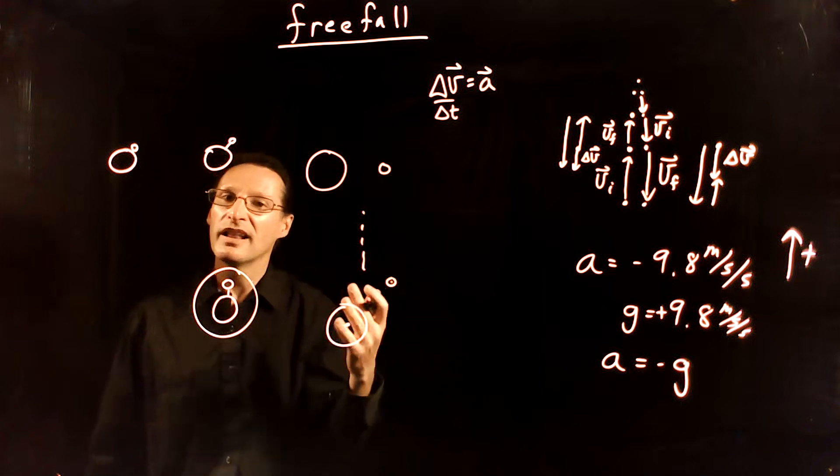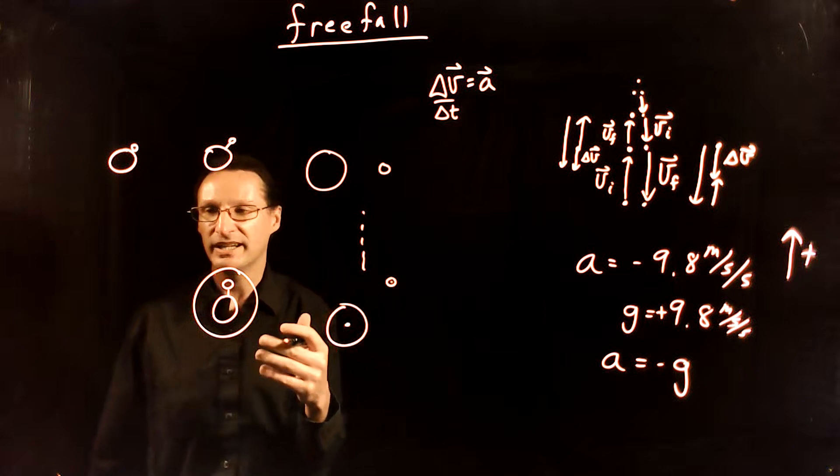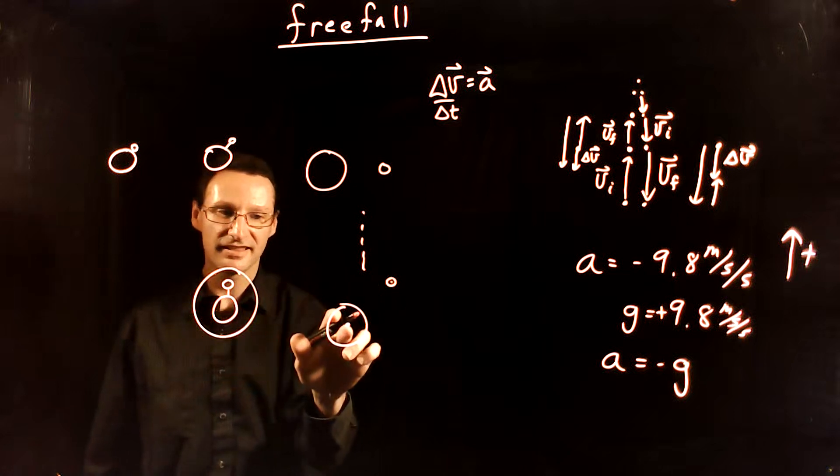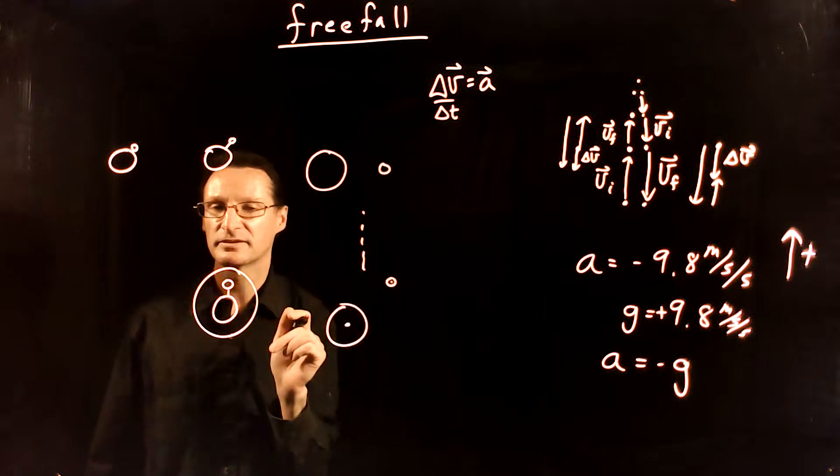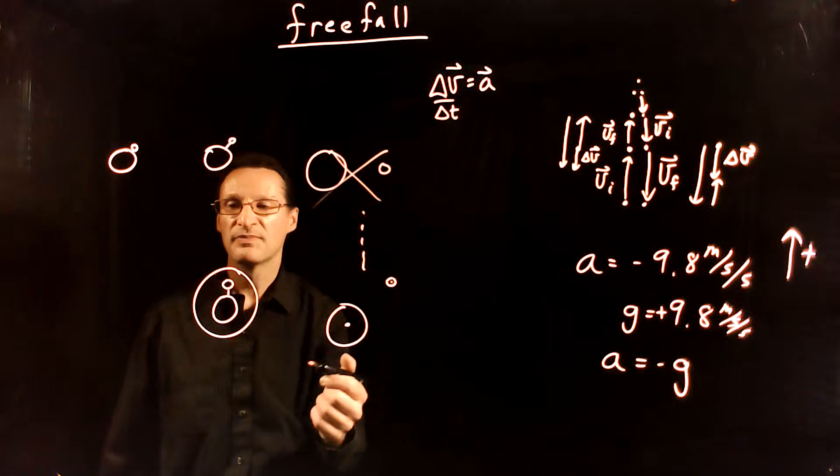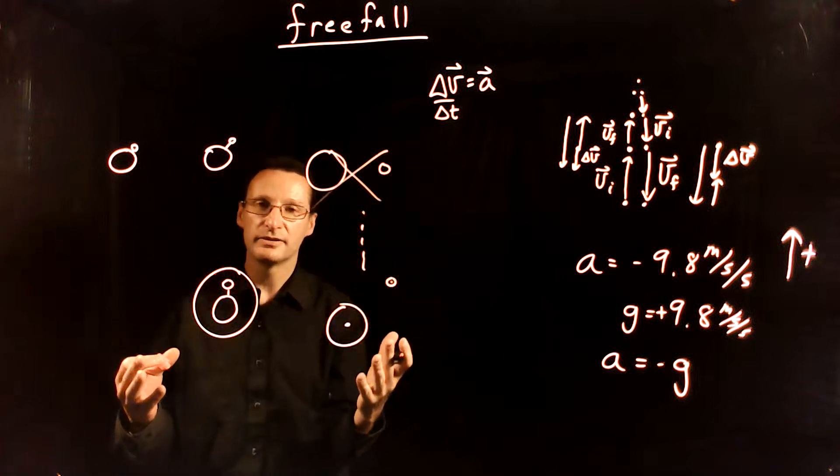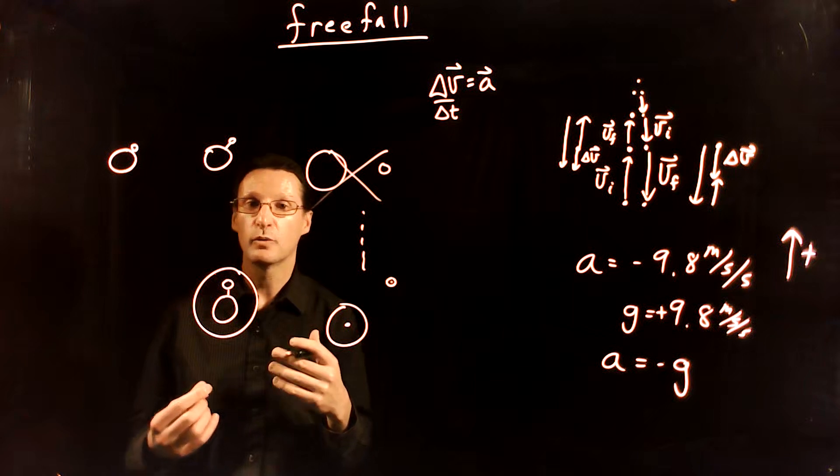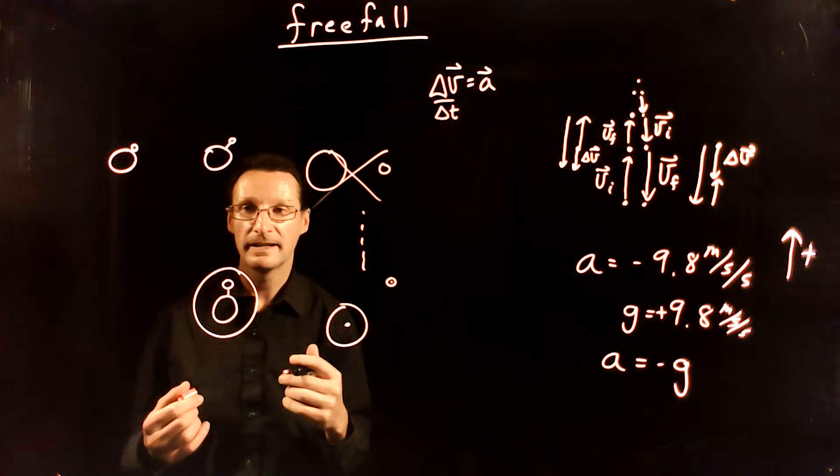So which is it? Well, this is a contradiction, right? It cannot be both—cannot fall with greater acceleration than this one and less acceleration than this one at the same time. So our initial assumption is wrong. And in fact, if gravity is the only force acting, all things will accelerate on the surface of the earth with the same acceleration, negative g.